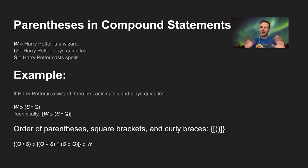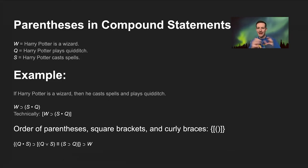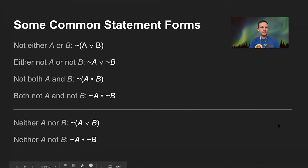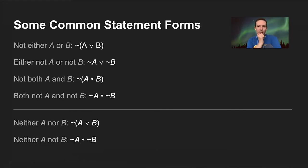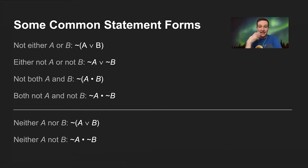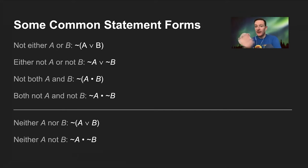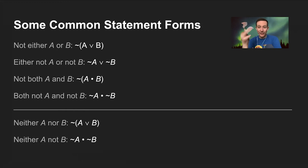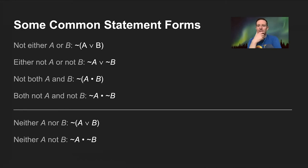Parentheses, brackets, and braces are used in logic notation to show nesting and groupings — to see what the innermost and outermost levels are. Your textbook uses these three different types of markings to make that easier to read.